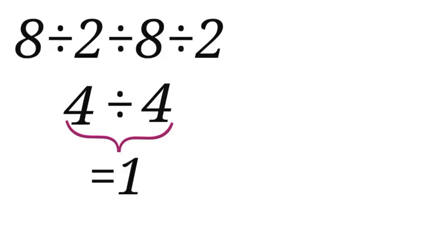8 divided by 2 divided by 8 divided by 2. Let us solve: 8 divided by 2 is 4, so we now have 4 divided by 4 equals to 1. Even though that sounds convincing, it is not correct.